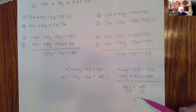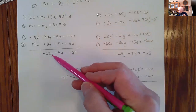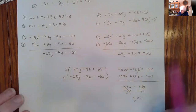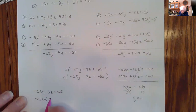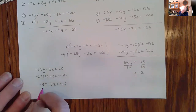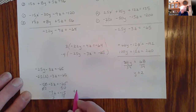Now with y equals 2, work back up. Using equation negative 25y minus 3z equals negative 65: negative 25 times 2 equals negative 50. So negative 50 minus 3z equals negative 65. Add 50: negative 3z equals negative 15. Divide by negative 3: z equals 5.